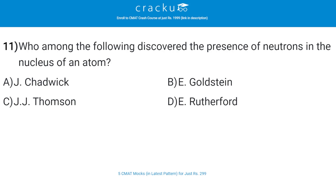Who among the following discovered the presence of neutrons in the nucleus of an atom? The correct answer is A, J. Chadwick. The full name is James Chadwick. By 1920, most of the mass of atoms was known to be located in the nucleus, containing protons. In May 1932, James Chadwick announced that the core also contained a new uncharged particle called the neutron.